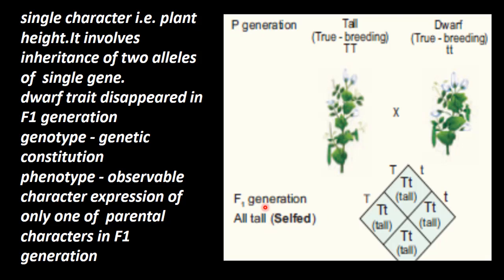These are the first generation plants — F1 generation plants. In the F1 generation, not a single plant was short. The dwarf condition was not seen in any F1 plant. So, the dwarf trait disappeared in the F1 generation. In the F1 generation, one parent's character is not expressed.